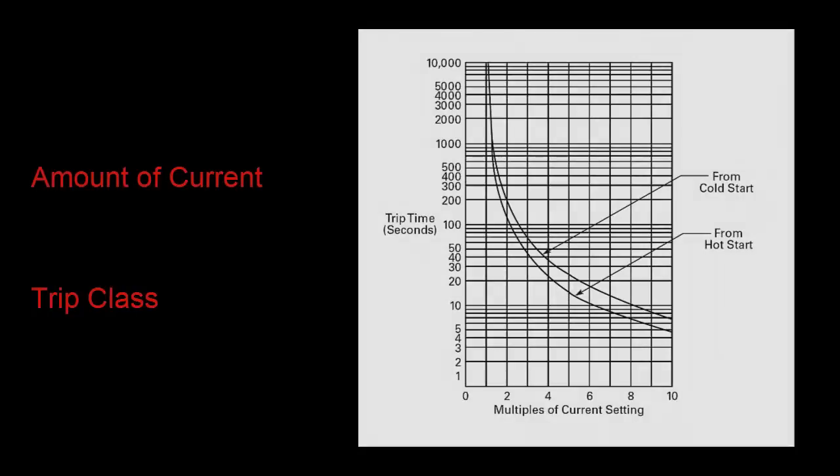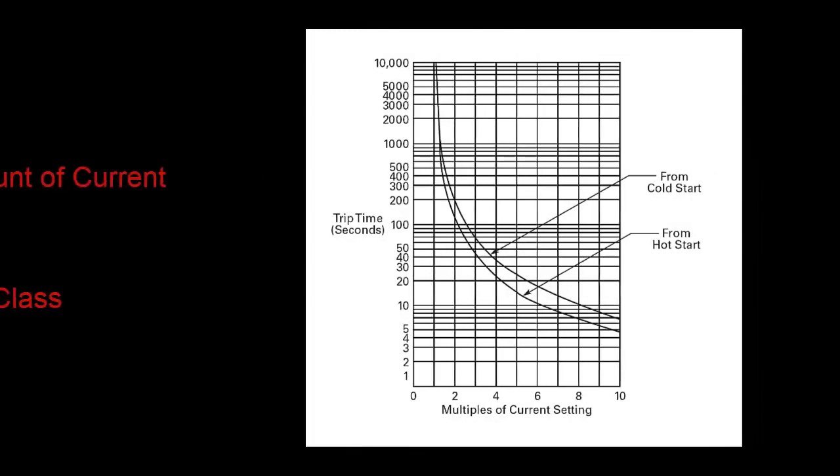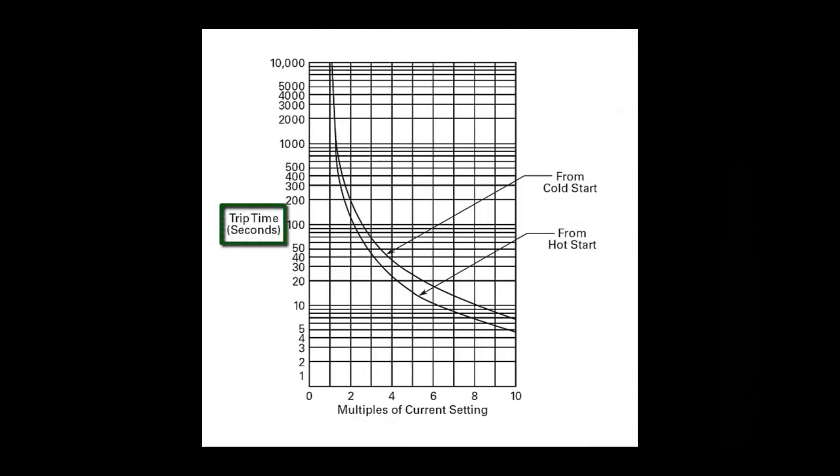And we answer this question using what we call time-current trip curves. This graph with a logarithmic scale shows time in seconds on the y-axis and current as a multiple of the FLA dial setting on the x-axis.